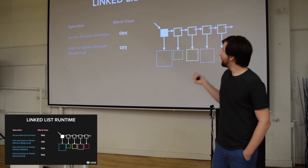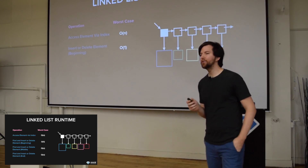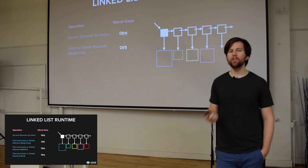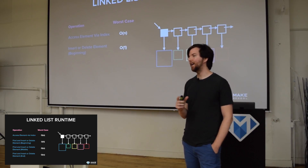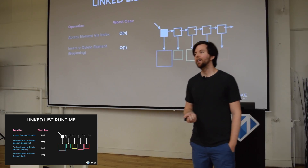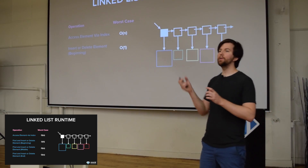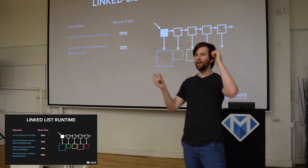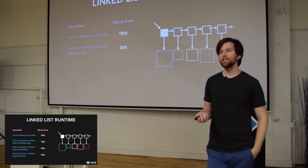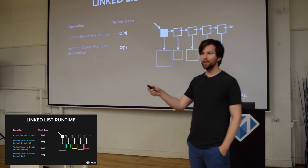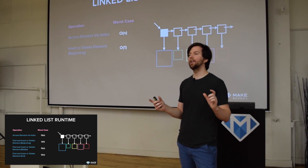If you read the Python list documentation, because it's a hybrid, it says you probably shouldn't be adding a bunch of items to the beginning of a Python list because it's going to be really inefficient — it takes O(N) instead of constant time. There's actually a special data structure in Python called a deque (spelled D-E-Q-U-E) that gives you constant time access at both the beginning and the end.